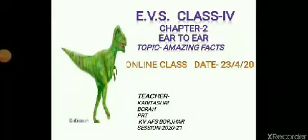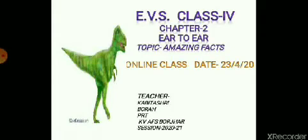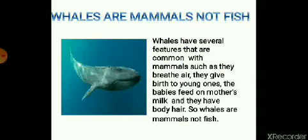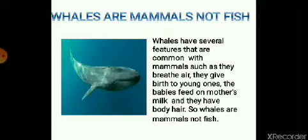Good morning children. Welcome to today's EVS class. Myself, Kabita Shree here. We are doing the second chapter Year to Year. In yesterday's class you have learnt about mammals and birds. Today we will learn about some amazing facts about the animals. Look at the picture of a whale here. Whales have several features that are common with mammals — such as they breathe air, they give birth to young ones, the babies feed on mother's milk and they have body hair.